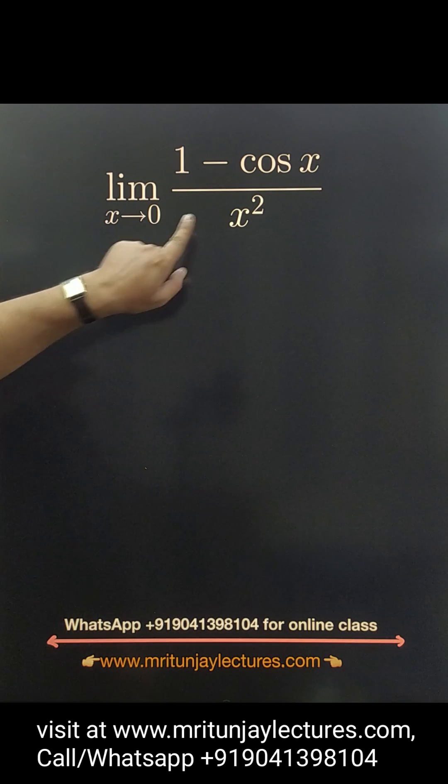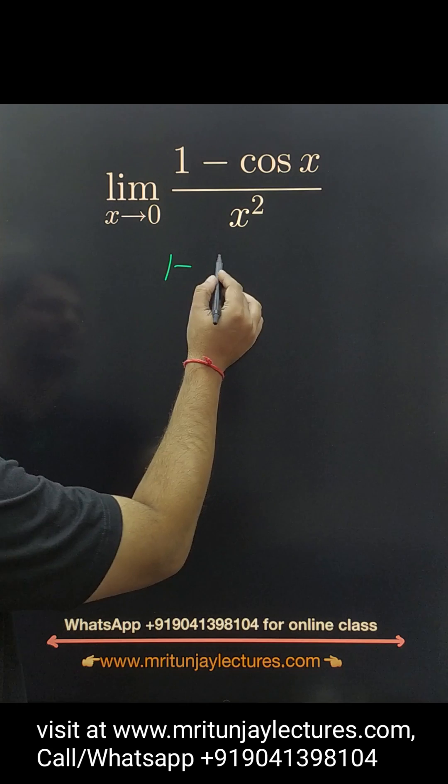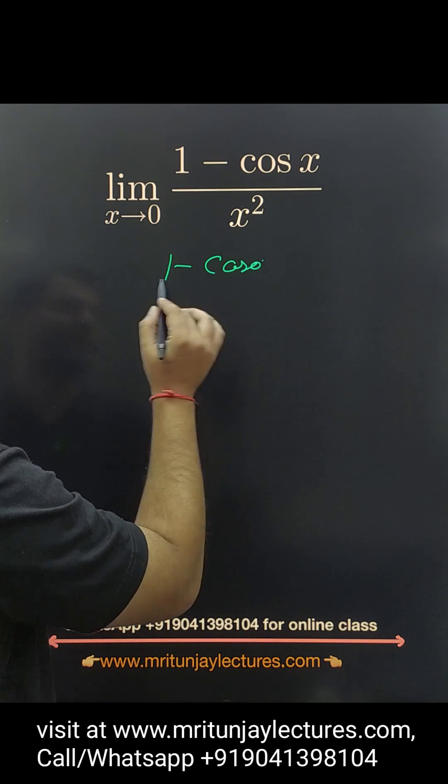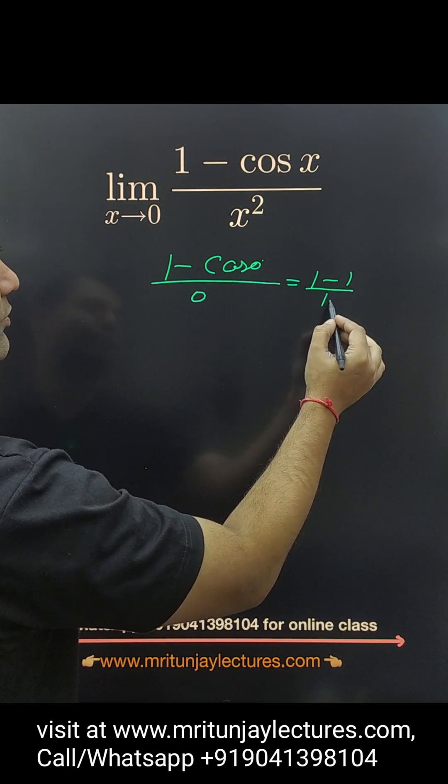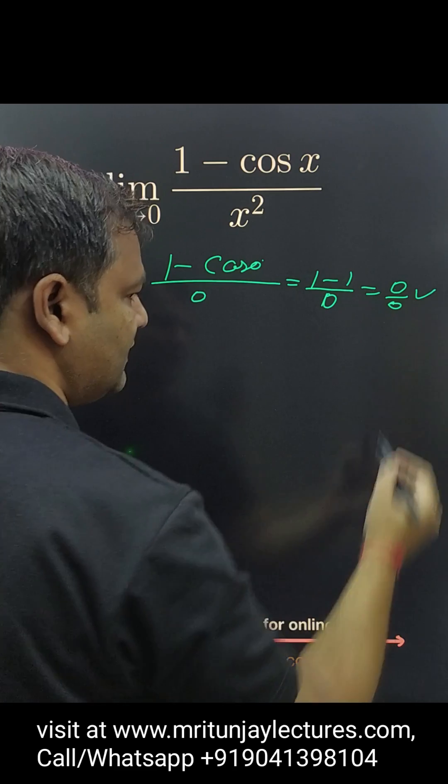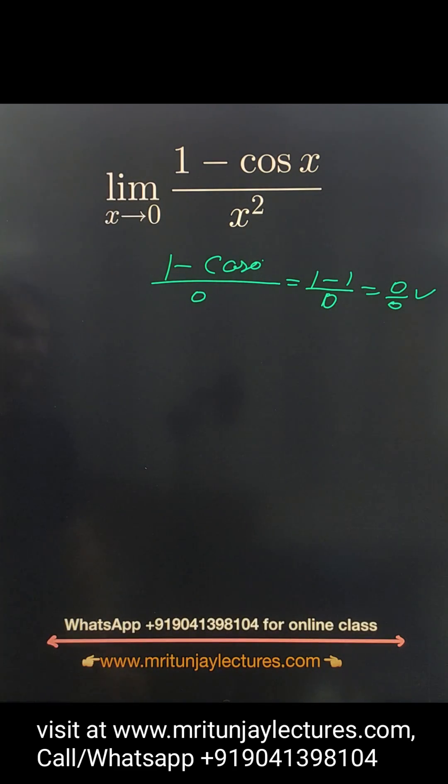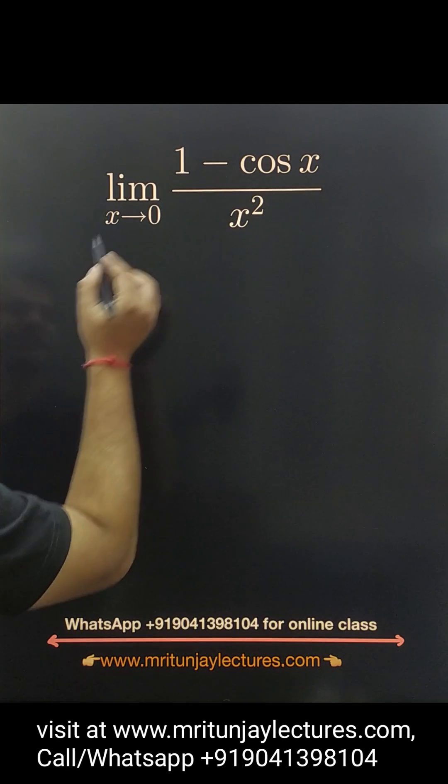Simply, first of all, put x equal to 0. Then we got 1 minus cos 0 divided by 0. Cos 0 is 1, so 1 minus 1 equals 0 by 0. We got indeterminate form. So how can we solve? Simply look here, this one written...